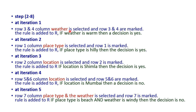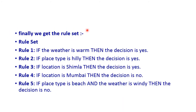In the first iteration we take the weather column and generate the rule: if weather is warm then decision is yes. In the second iteration, for place type: if place type is hilly then decision is yes. Third iteration, for location: if location is Shimla then decision is yes. Fourth iteration: if location is Mumbai then decision is no. In the fifth iteration, combining place type and weather: if place type is beach and weather is windy then decision is no. Likewise we can generate all rules and finally get a rule set of five rules.